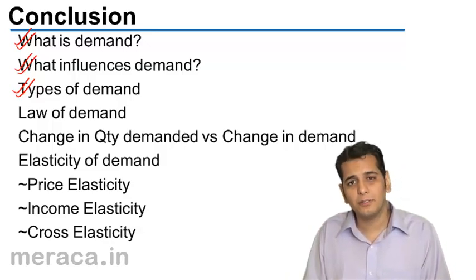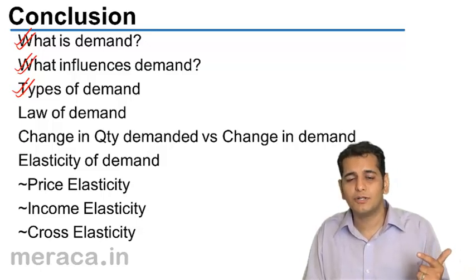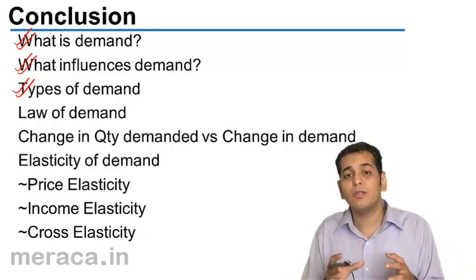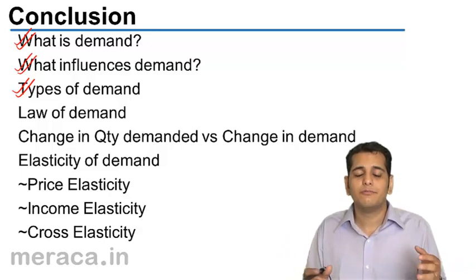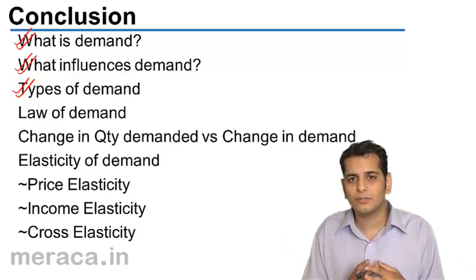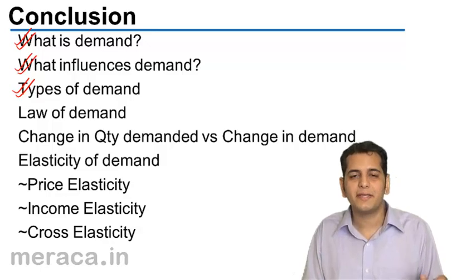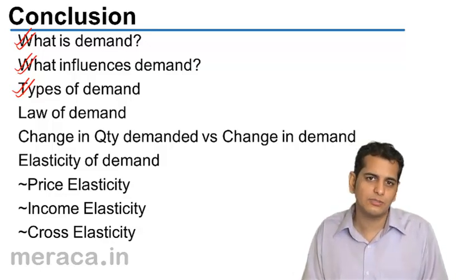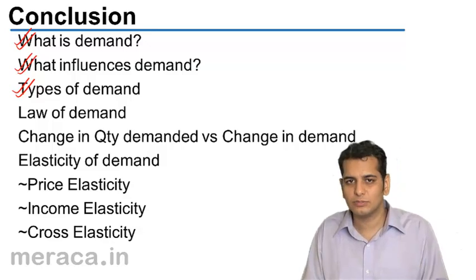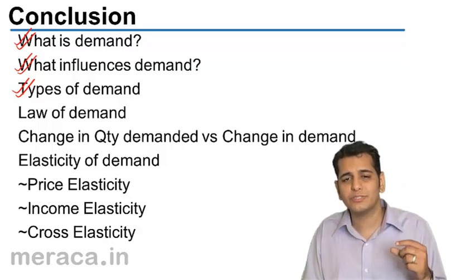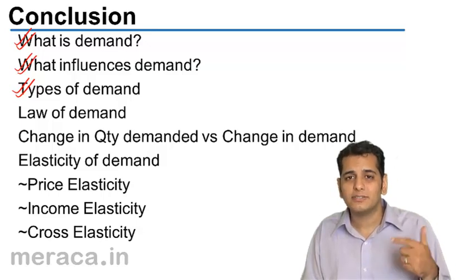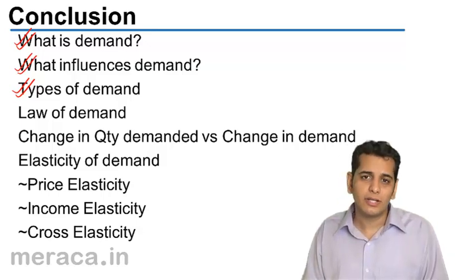Then we've done durable and non-durable goods. Durable goods are goods which have a longer life — we do not tend to go to the market to buy them regularly; it takes 5 to 7 years to consume or repurchase them. Non-durable goods are goods which have a shorter life, and we tend to purchase them in a recurring manner.